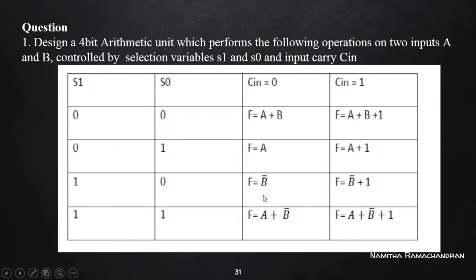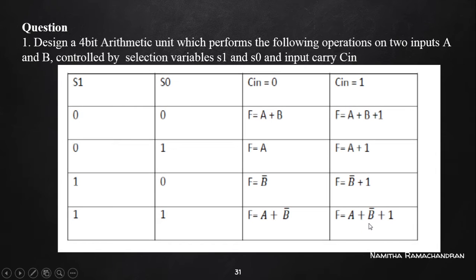Here is an important case: we want to perform the complement of B input as the output of our ALU. With S1=1, S0=0, and C-in=1, it performs complement incrementation — that is, complement of B input incremented by 1. With S1=1 and S0=1, it performs A plus B-complement; with C-in=1, it performs A plus B-complement plus 1, which is the 2's complement addition — that means A minus B.